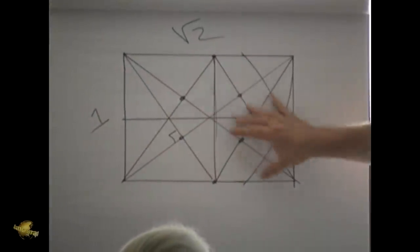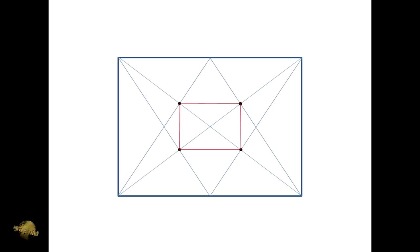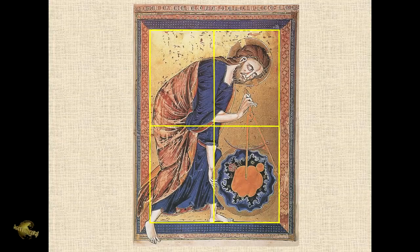This is one of a family. That's a root two rectangle. There's a root three, a root four, a root five, a root six. Beyond the root six, I haven't been able to find any examples of actual usage, but I've found examples up to a root six rectangle.